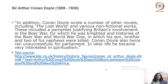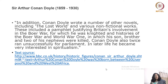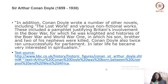Conan Doyle wrote a number of other novels including The Lost World and various non-fictional works. These included a pamphlet justifying Britain's involvement in the Boer War, for which he was knighted, and histories of the Boer War and World War I, in which his son, brother and two of his nephews were killed.